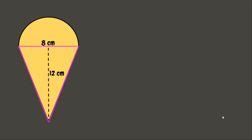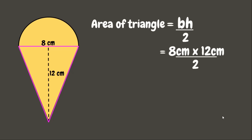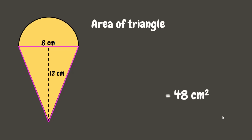The formula for the area of the triangle is base times height divided by 2. Here the base is 8 centimeters and the height is 12 centimeters. So 8 centimeters times 12 centimeters equals 96 square centimeters, divided by 2 gives us 48 square centimeters — that is the area of the triangle.